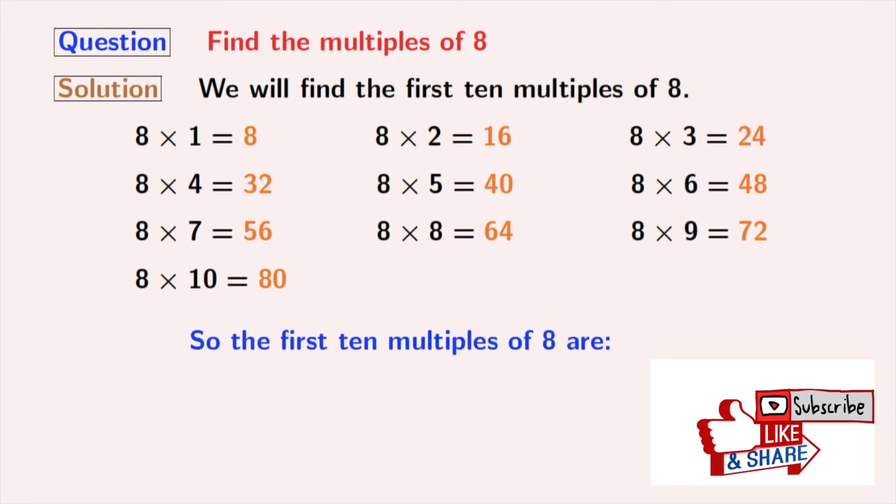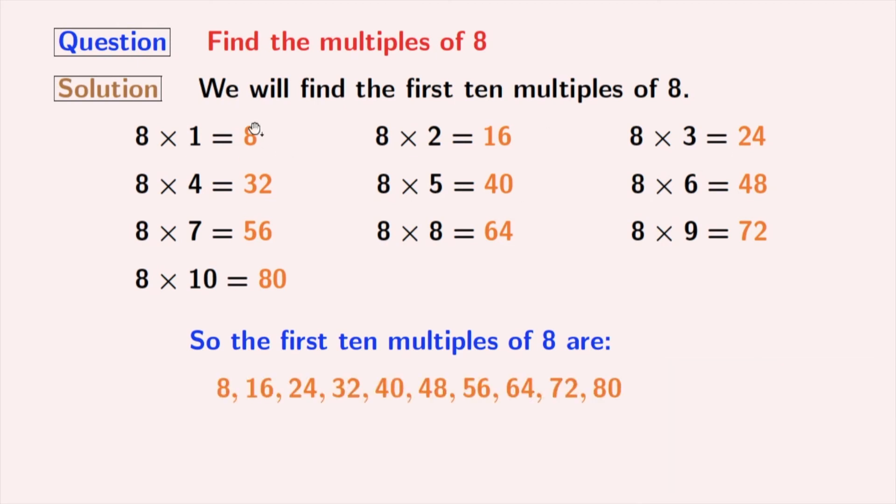So here are the first 10 multiples of 8 which are the orange ones: 8, 16, 24, 32, 40, 48, 56, 64, 72, and 80.